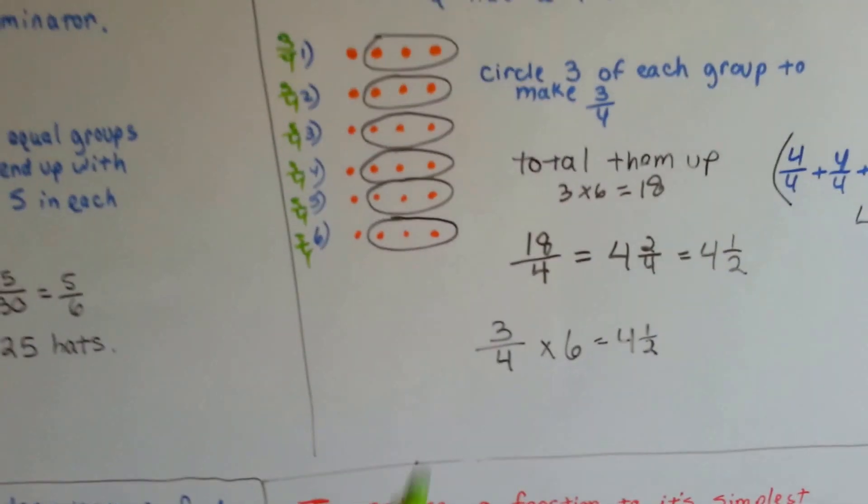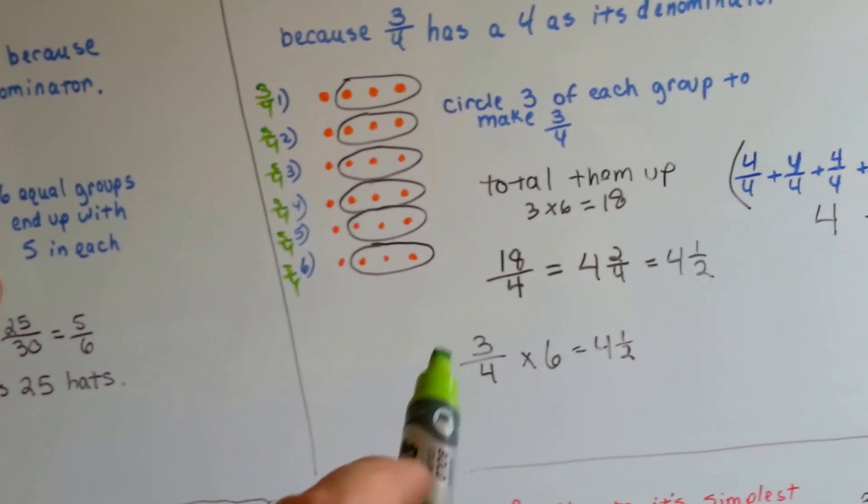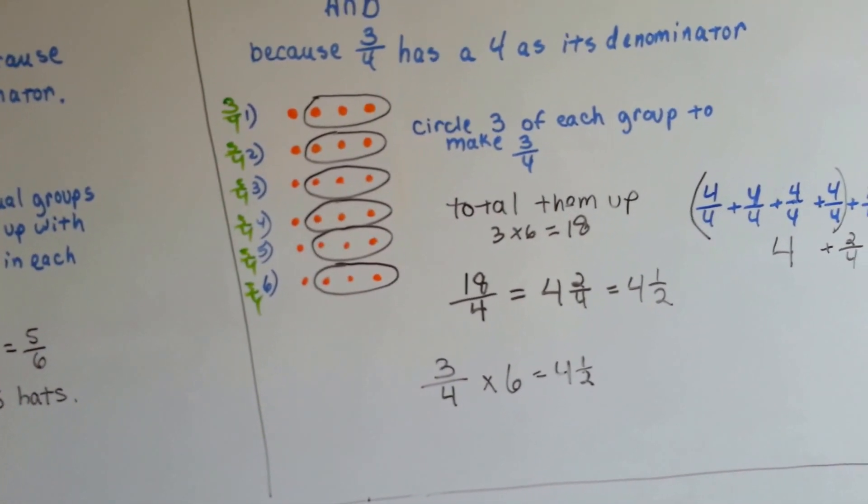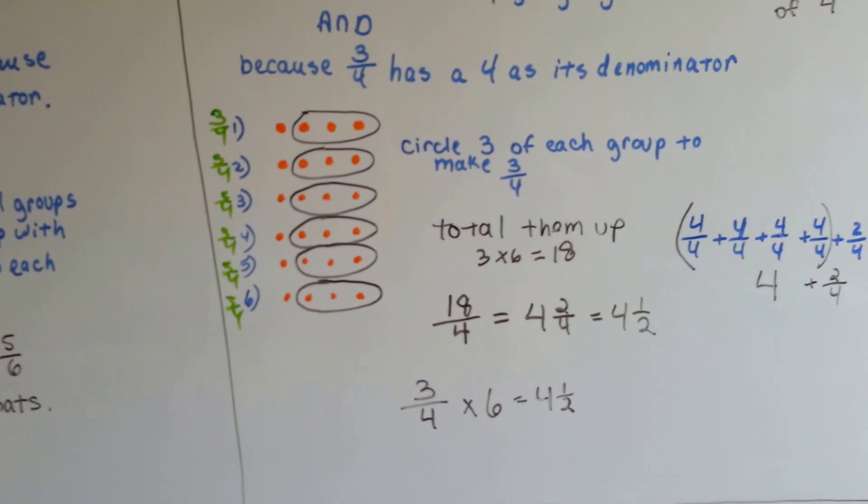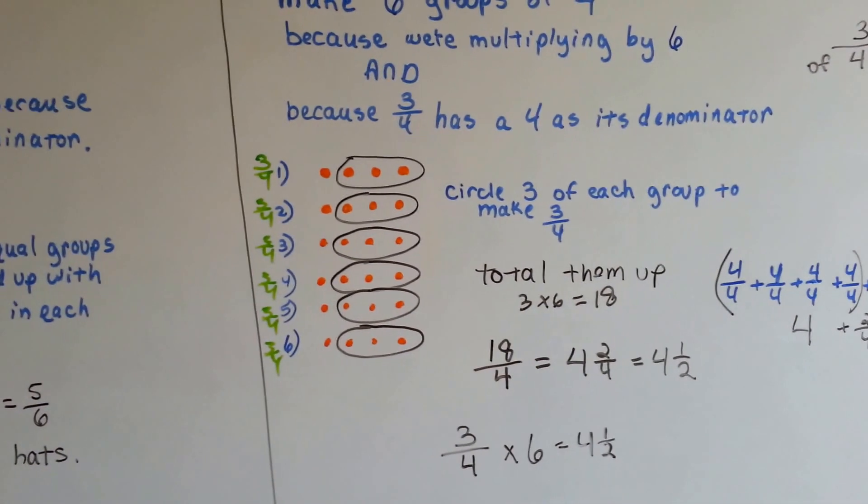Now there's ways of doing this with just numbers to blow your mind. We could have gone 6 times 3 is 18 over the 4. But then you would have known how to do it number-wise, but you wouldn't have understood why it equaled 18 fourths. And that's what we're trying to do here.